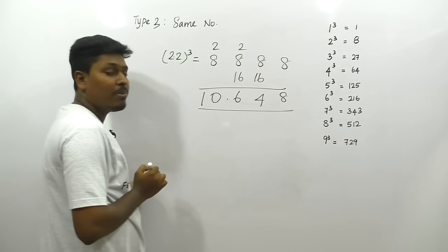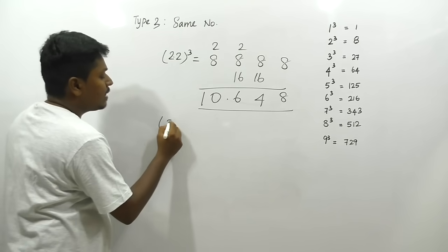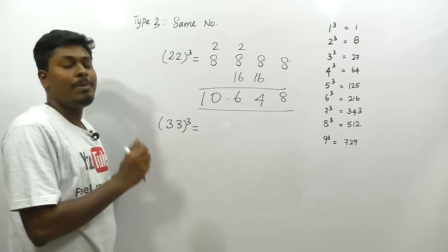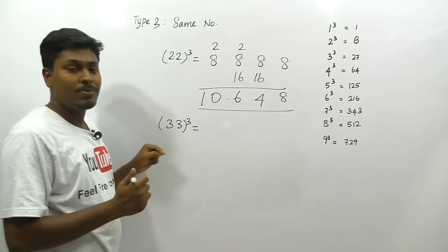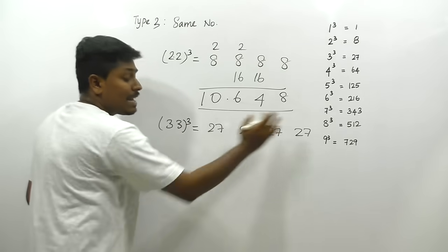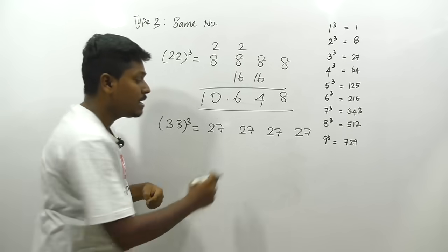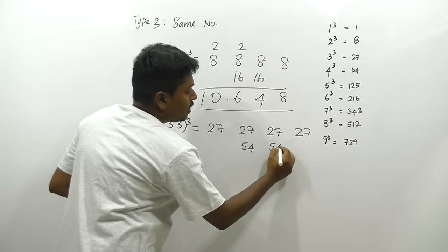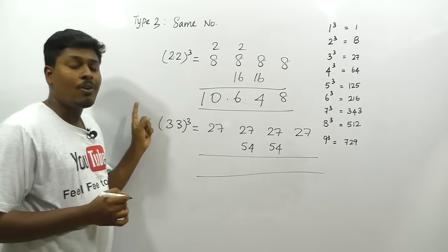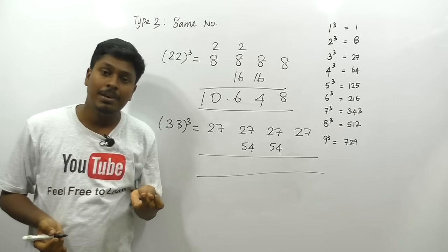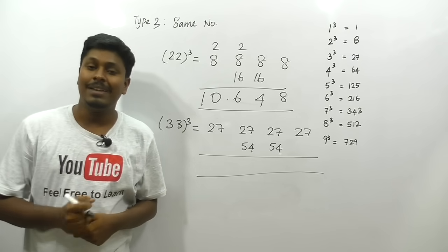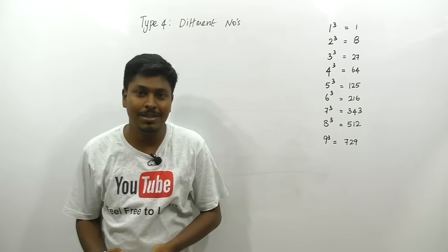For 33³ (Type 3): cube either digit: 3³ = 27. Write it four times: 27, 27, 27, 27. Leave first and last, double the centers: 27 doubled = 54. Follow the same carry-and-add procedure to get the answer. Practice this for 44³, 55³, 66³, 77³, 88³, 99³. Then we move to Type 4.